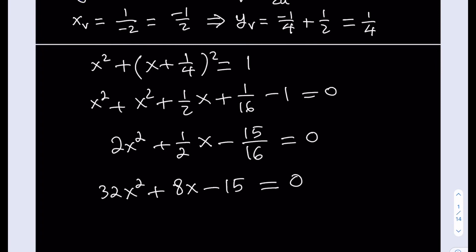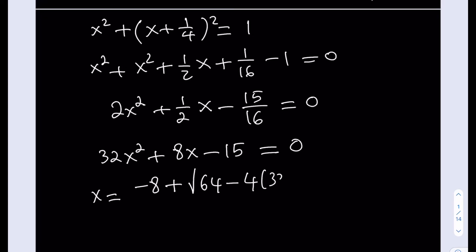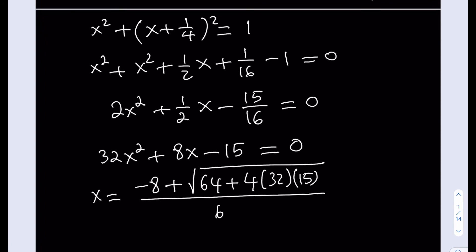This is a quadratic equation — much easier than the cubic or quartic equations from other puzzles. Multiplying both sides by 16 gives us 32x squared plus 8x minus 15 equals zero. Using the quadratic formula — focusing on the positive solution since side length must be positive — we get: negative 8 plus the square root of (64 plus 4 times 32 times 15), divided by 64.